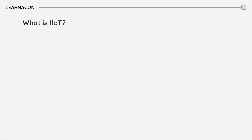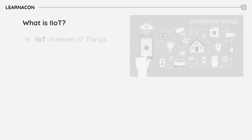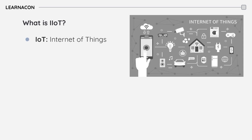Before diving into IIoT, let's first review what is IoT. IoT stands for Internet of Things and refers to the network of devices connected to the internet, collecting and sharing data. For example, when you adjust the temperature of your house from your smartphone, you are using an IoT application.